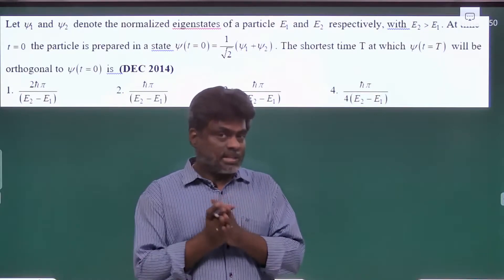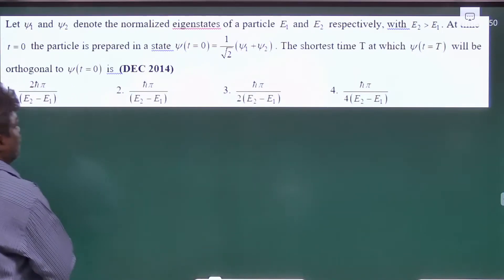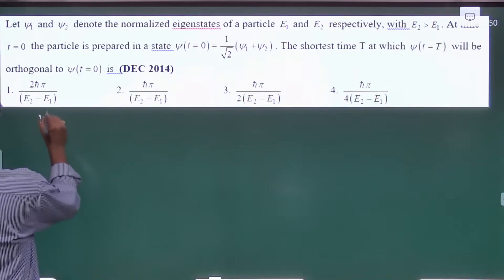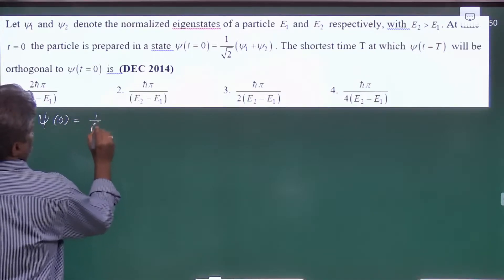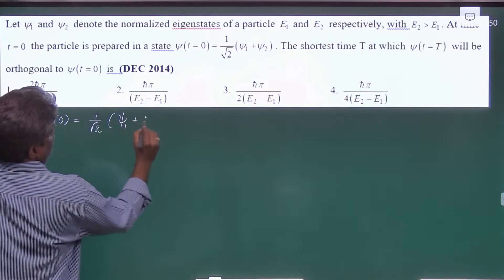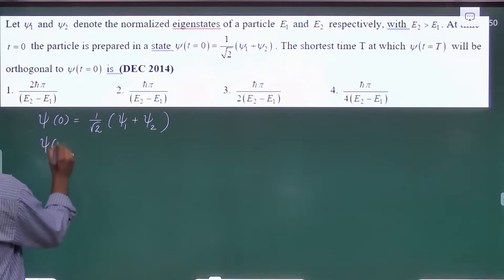So we have to find Psi of t and apply the orthogonal condition. This is the given Psi of 0 is equal to 1 by root 2, this is Psi 1 plus Psi 2. At a time t,